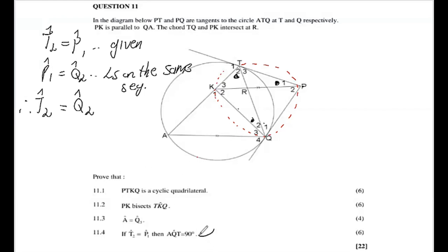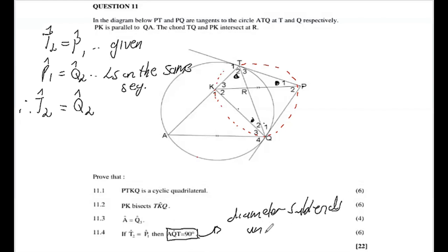The approach here is to prove that AKT is a diameter. A diameter subtends an angle of 90 degrees at the circumference. If we can show that K is the center, that means chord AKT is a diameter — and remember, diagrams are not drawn to scale, so AKT may well be a diameter even if it doesn't look like one.